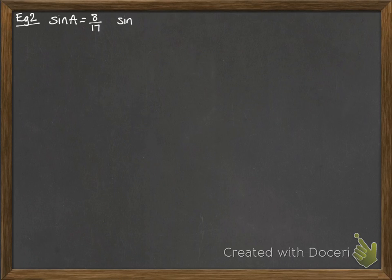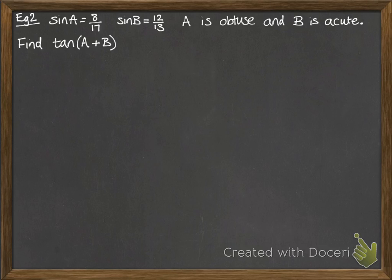Okay, slightly harder. We're looking at this one now, where sine A is 8 over 17. Sine B is 12 over 13. We're told that A is obtuse and B is acute. And we want to find tan of A plus B. So we need to unpack the information we've got there. To get tan, we need to know tan of A and tan of B. So to get tan of A and tan of B, we need to know cos of each of them, because tan is sine over cos. So let's use this to work out cos.